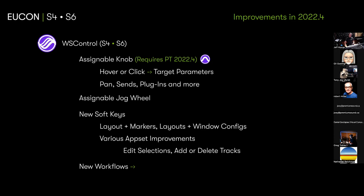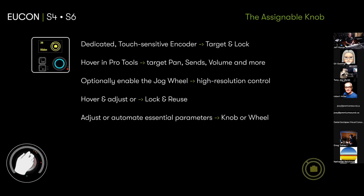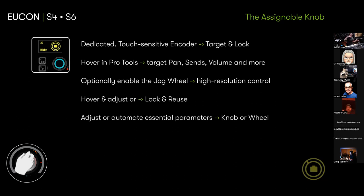So, the assignable knob: it's a dedicated encoder — whatever you throw over there, you've got it. It's touch-sensitive, color-coded, so at a glance you can see — oh, that's an insert parameter, that's a ribbon from an event-type plugin. You can either hover or lock: hovering lets you adjust different things on the fly, or you can lock — say, keep this elevation here for the Z parameter — giving you one extra container to lock, which is really useful.